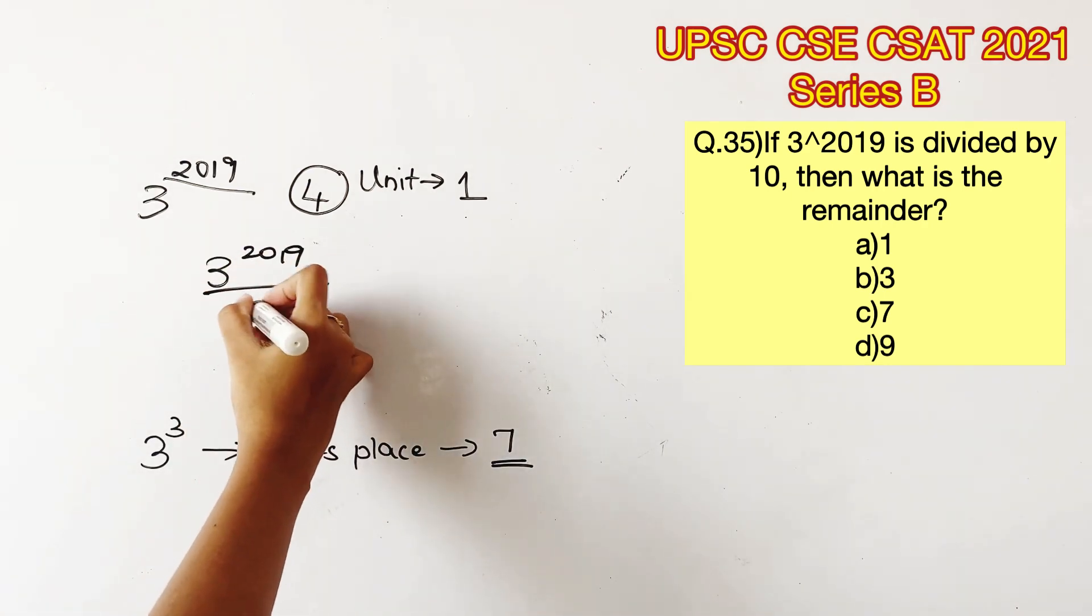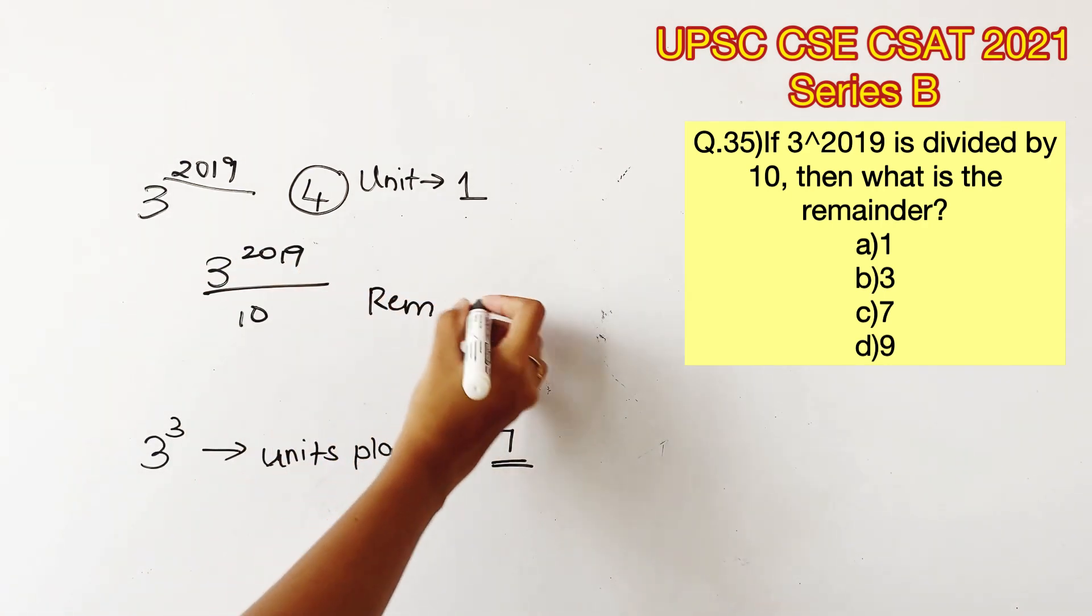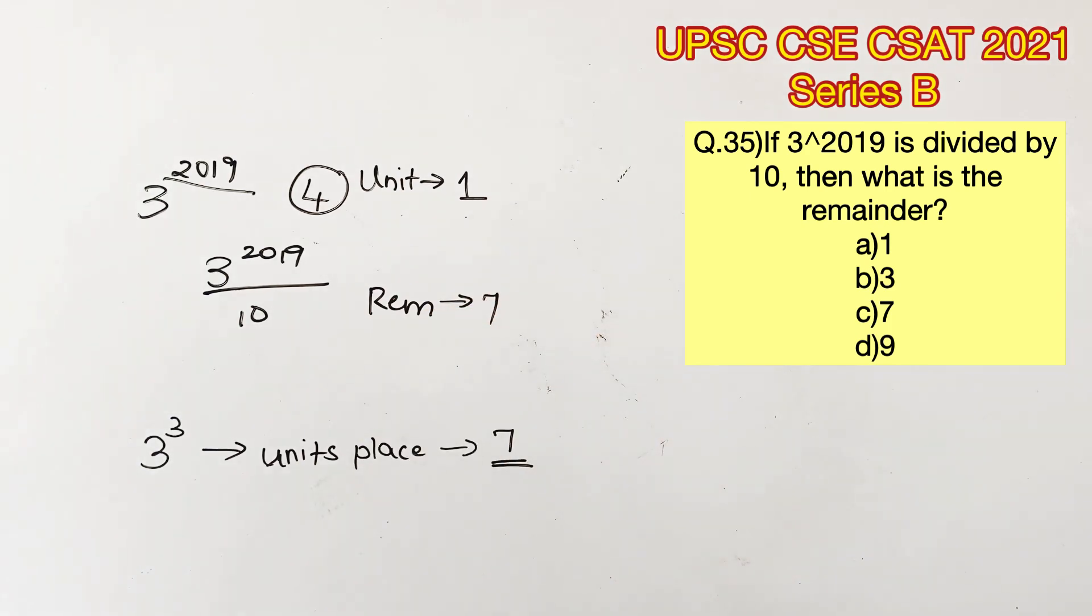Therefore, 3 power 2019 would give us 7 in the unit's place. So we can conclude that this value divided by 10 would give us a remainder of 7. So option C is the right answer.